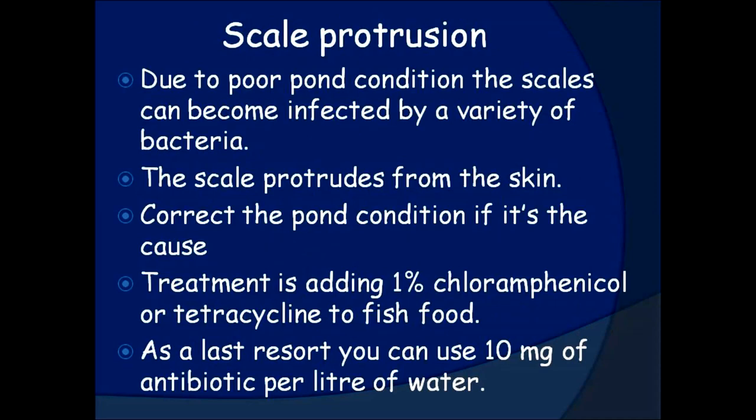Scale protrusion. Due to poor pond conditions, the scales can become infected by a variety of bacteria, causing the scales to protrude from the skin. Correct the pond condition if it is the cause. Treatment is adding 1% chloramphenicol or tetracycline to fish food. As a last resort, you can use 10 milligrams of antibiotic per liter of water.